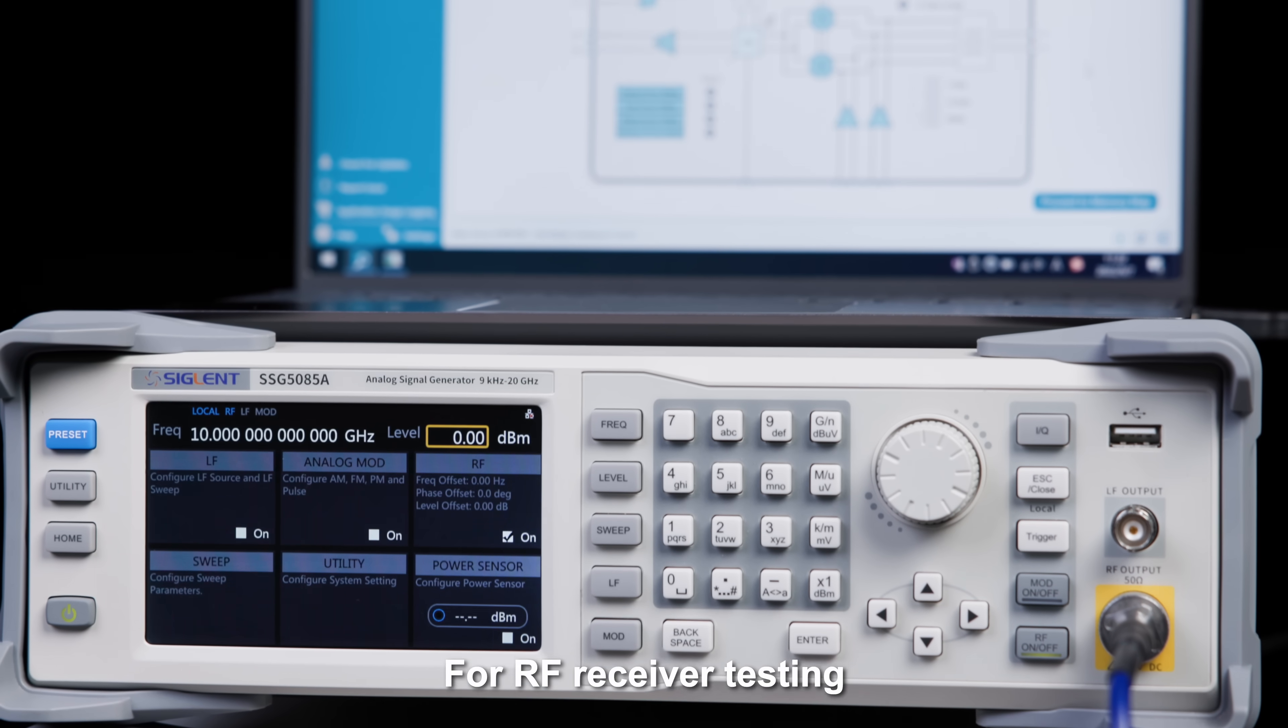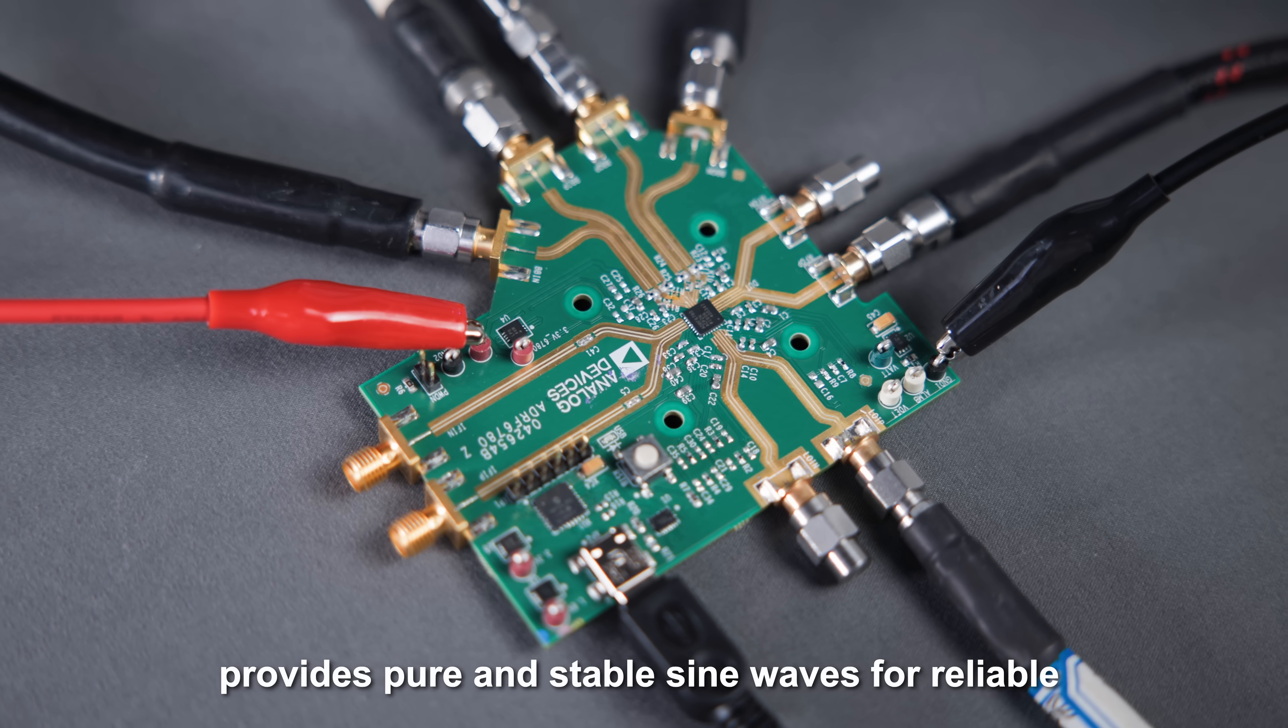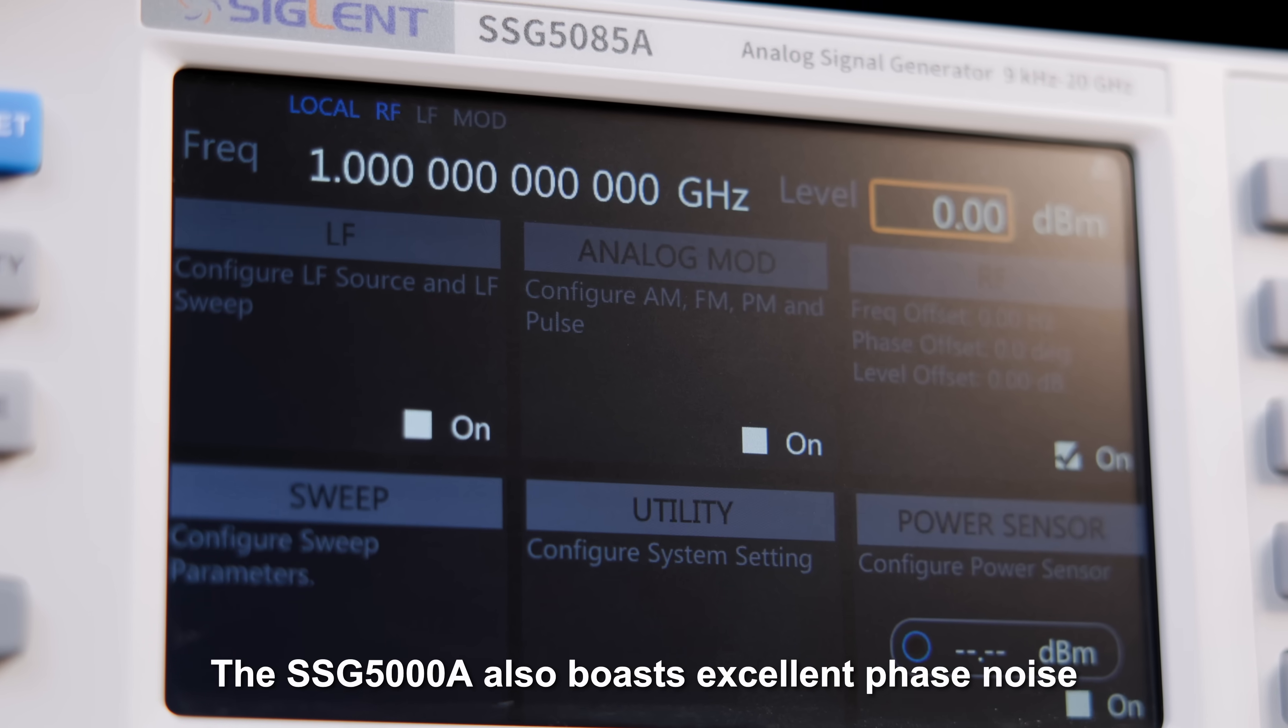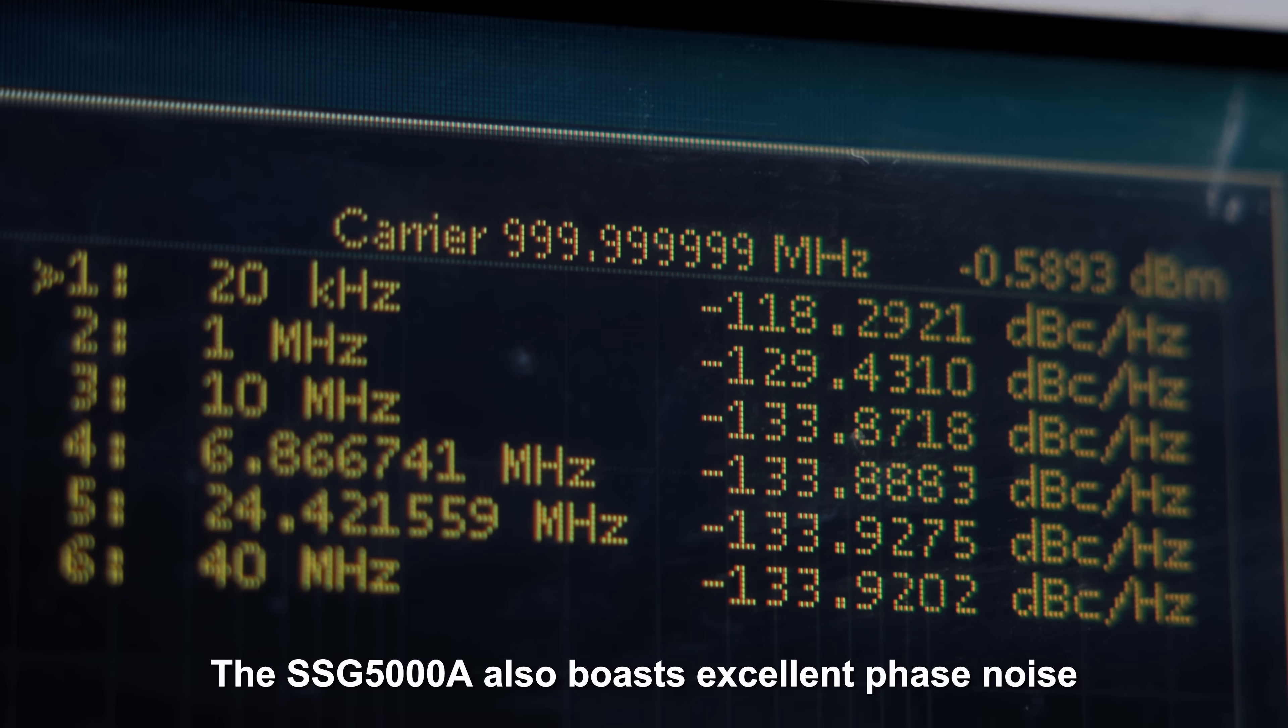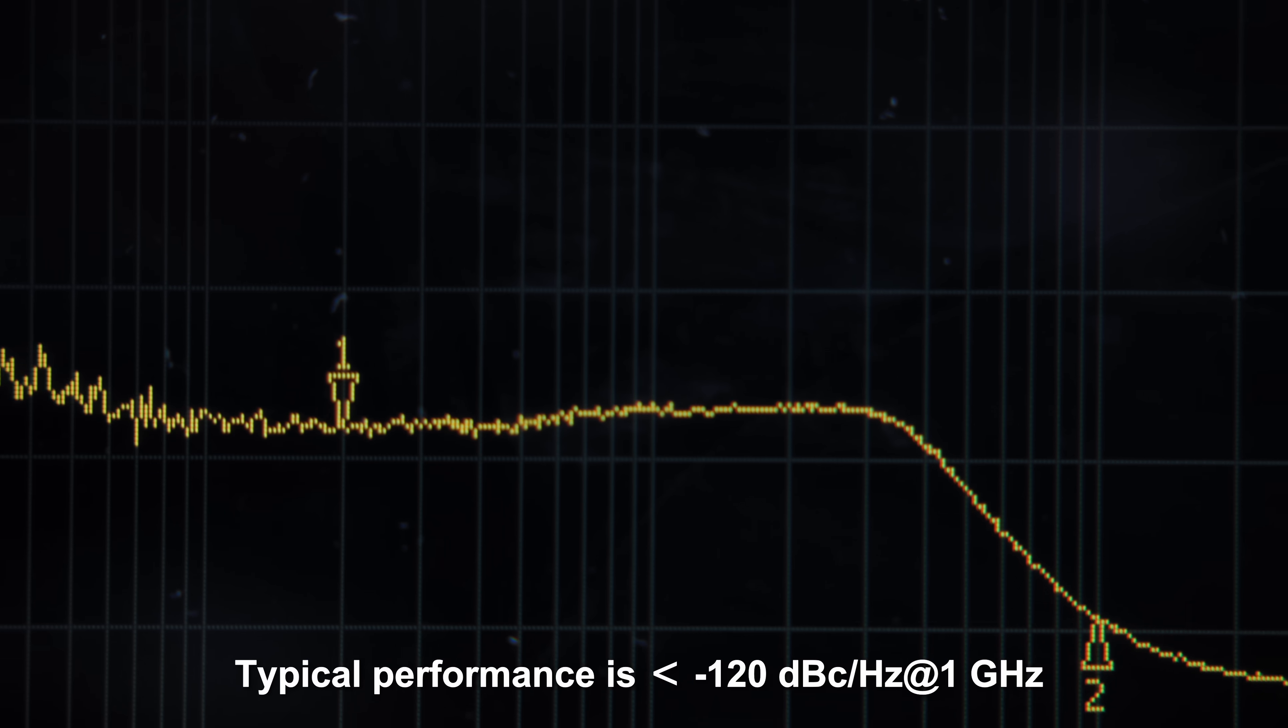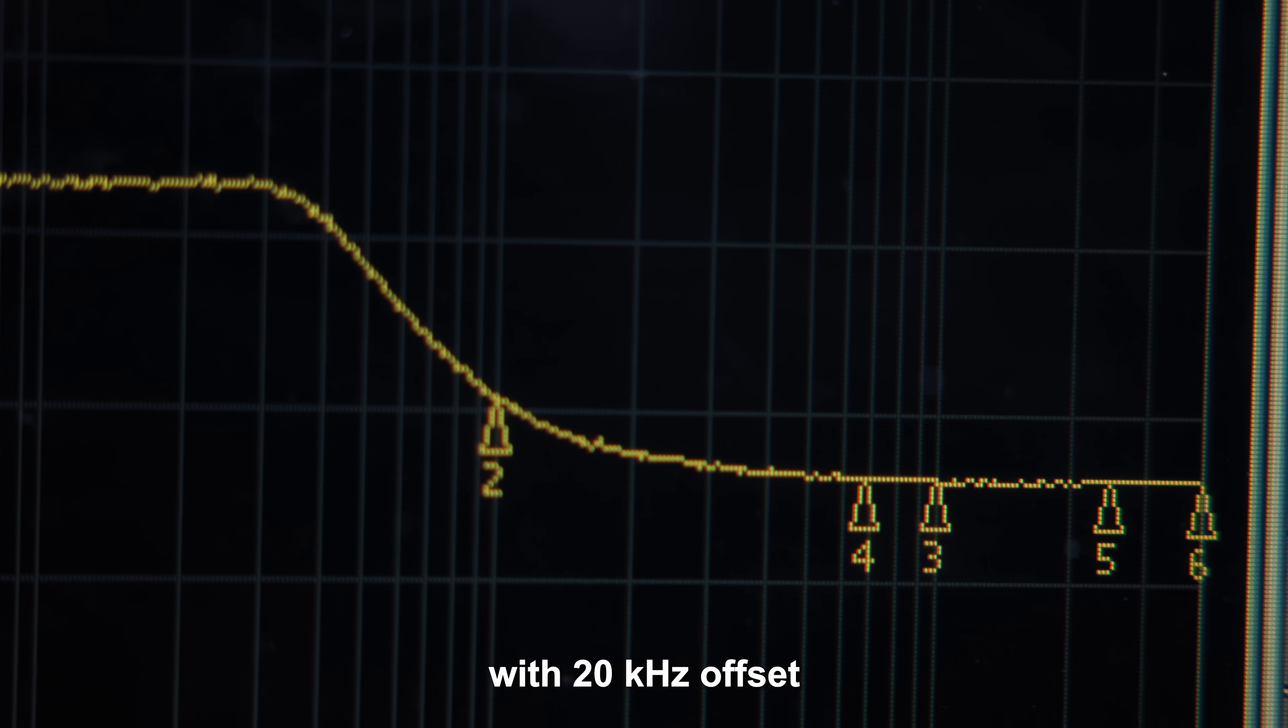For RF receiver testing, the Siglent SSG5000A provides pure and stable sine waves for reliable and repeatable test signals. The SSG5000A also boasts excellent phase noise with typical performance less than minus 120 dBc per hertz at 1 GHz and 20 kHz offset.